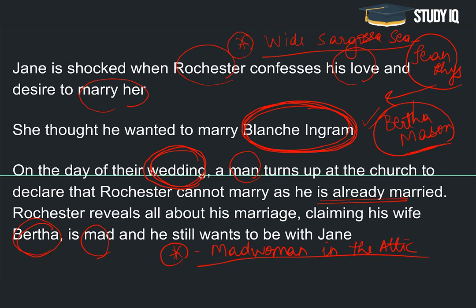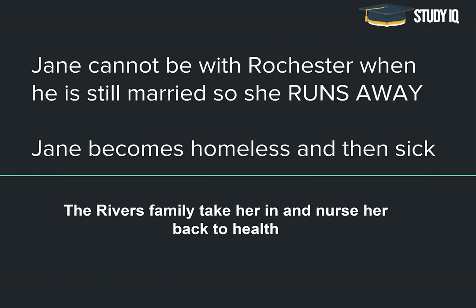Rochester پھر بتاتا ہے کہ اس کی wife Bertha Mason پاگل ہے، اور اسی لئے وہ چاہتا ہے کہ اس کا vivah Jane کے ساتھ ہو۔ لیکن جب Jane سنتی ہے کہ Rochester کا پہلے سے vivah ہو چکا ہے، تو اسے بہت برا لگتا ہے اور she cannot be with Rochester۔ اس لئے وہ بھاگ جاتی ہے — وہی تھی mad woman in the attic۔ Jane بھاگ جاتی ہے، homeless ہو جاتی ہے، اور بیمار بھی پڑ جاتی ہے۔